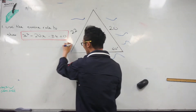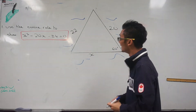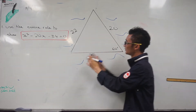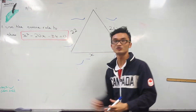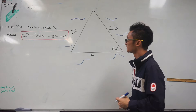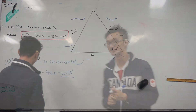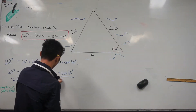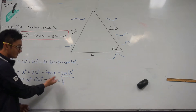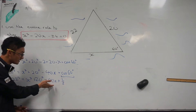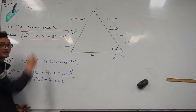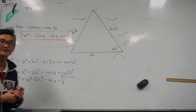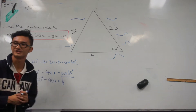This question was a lot trickier, I'll admit. It was asking you to use the cosine rule to show that x squared minus 20x minus 84 is equal to 0 — minus 40x times a half. And 40 times a half is just going to give me that negative 20x that I'm looking for there.